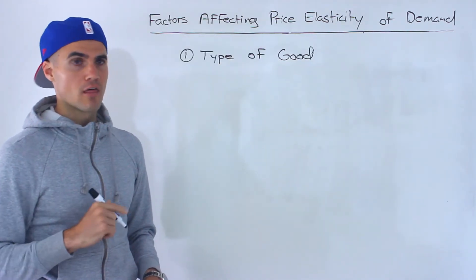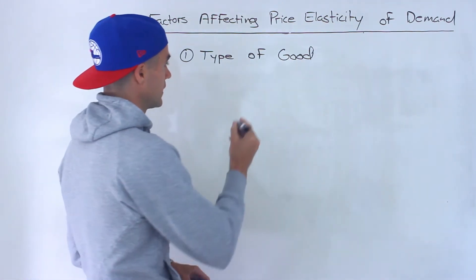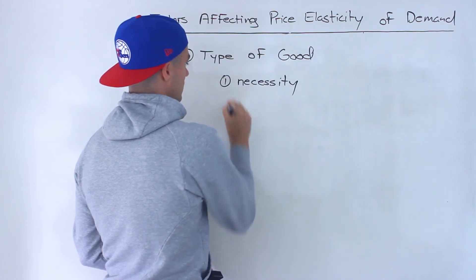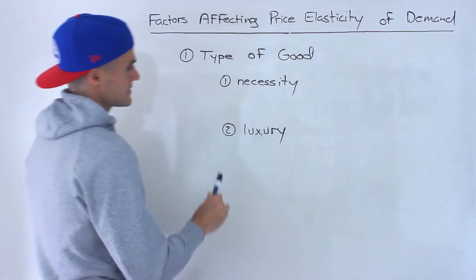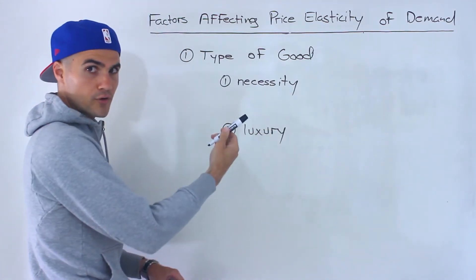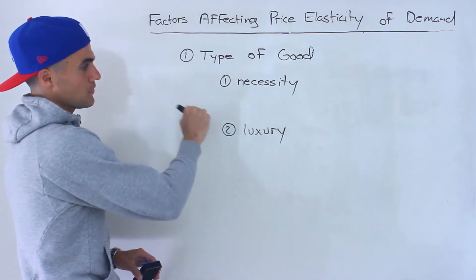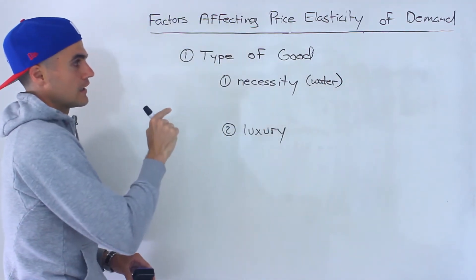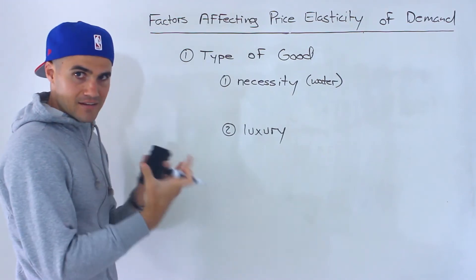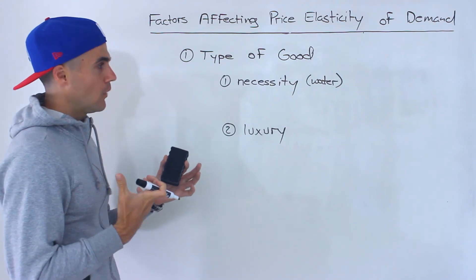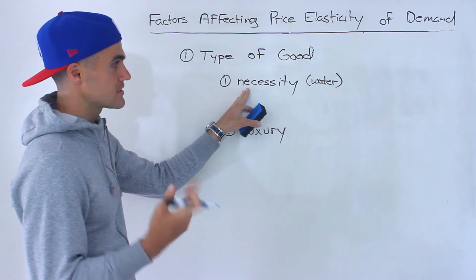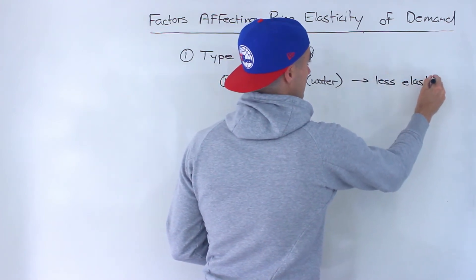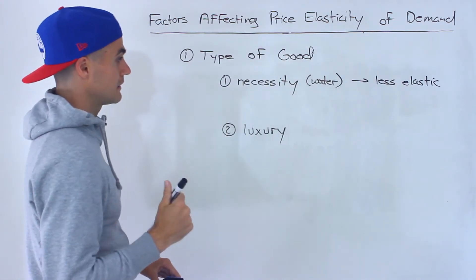So when I'm going through these factors, I'm going to intuitively relate it back to this definition. The first factor we'll cover is the type of good that you're dealing with. The two main categories are: a good is either going to be a necessity or it's going to be a luxury. Sometimes you may see a third category in between called a comfort good, but I'm going to stay on the extremes of the spectrum. If a good is a necessity, like water, intuitively if the price of water goes up, the demand isn't going to change by a lot because it's a necessity. So a necessity in general is going to be less elastic.